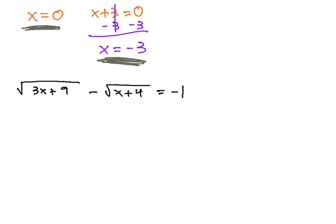So let's first check x equals 0. That means we're going to plug 0 in for each of these x's. So we have the square root of 3x, or 3 times 0 plus 9, minus the square root of x, or 0 plus 4, equals negative 1.